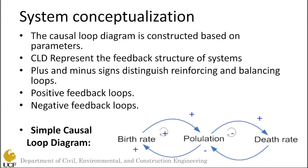After we find the parameters, we develop a causal loop diagram. One of the main advantages of system dynamic modeling is that it allows for a more in-depth investigation of the relationships and interactions between different parameters within the system through their associated feedback loops, which will be used to develop the causal loop diagram.